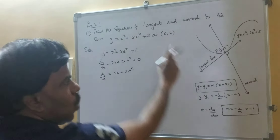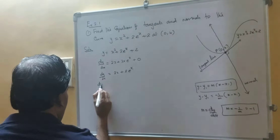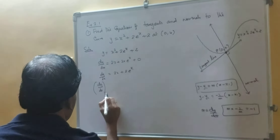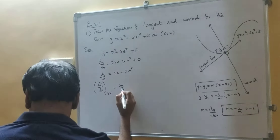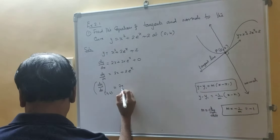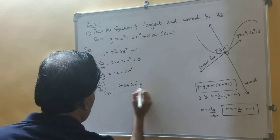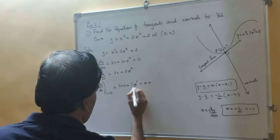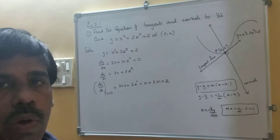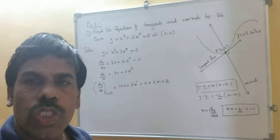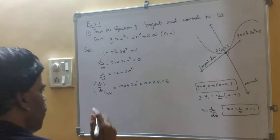We have to find out the slope at this point. So dy by dx at 0 comma 4 equal to 2 into 0 plus 2 into e to the power 0. Now 2 into 0 is 0, and anything raised to 0 is 1. So we got slope equal to 2 at this point.